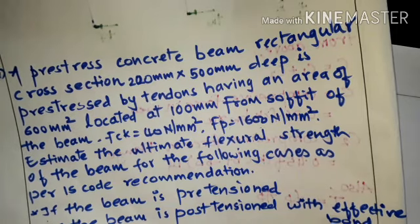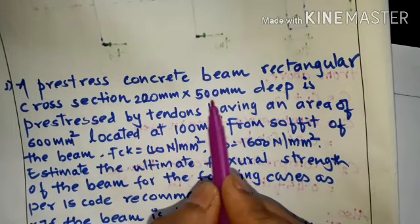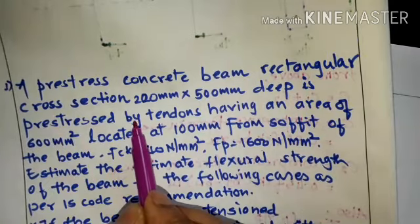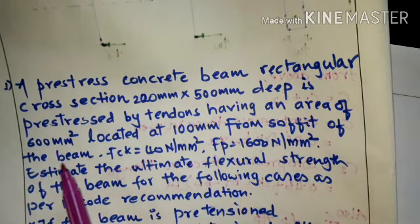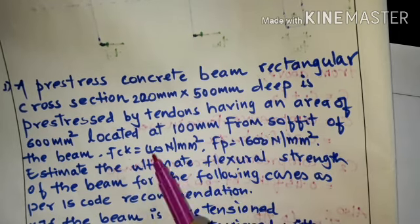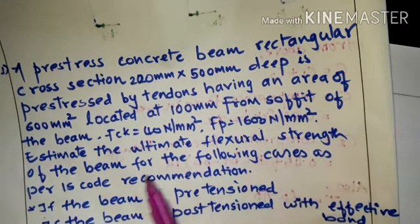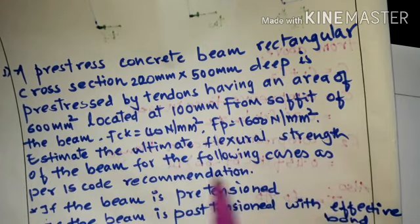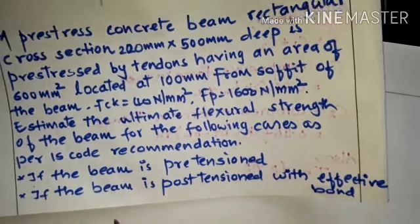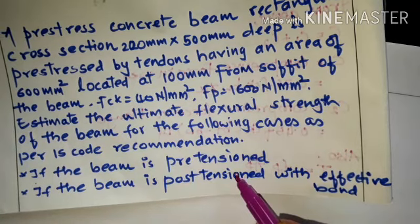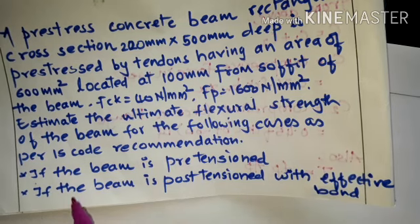The problem statement: a prestressed concrete beam with rectangular cross section 200 mm by 500 mm deep is prestressed by tendons having an area of 600 mm square located at 100 mm from the soffit of the beam. FCK is 40 N/mm² and the characteristic tensile strength of tendons FP is 1600 N/mm². Estimate the ultimate flexural strength as per IS 1343 for two cases: pre-tensioned beam and post-tensioned beam with effective bond.